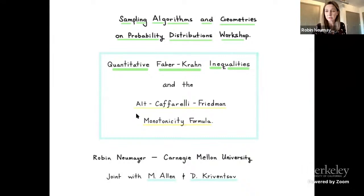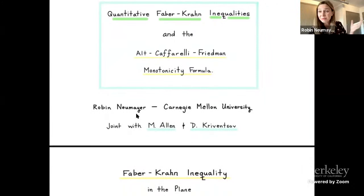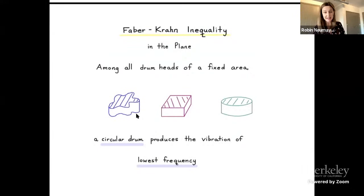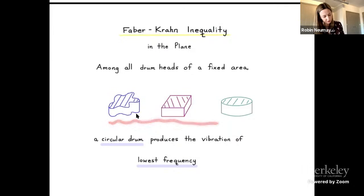Please have no hesitation about stopping and interrupting me along the way to ask questions as they arise. The Faber-Krahn inequality in the plane in R2 says the following. Physically, if you consider drum heads of a fixed area—if you have some fixed amount of material and you're building a drum—then of all possible shapes, a circular drum head is the one that's going to produce the vibration of lowest frequency.